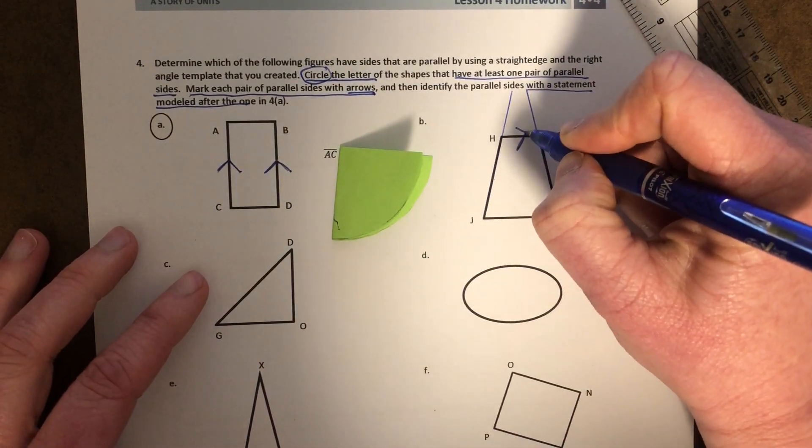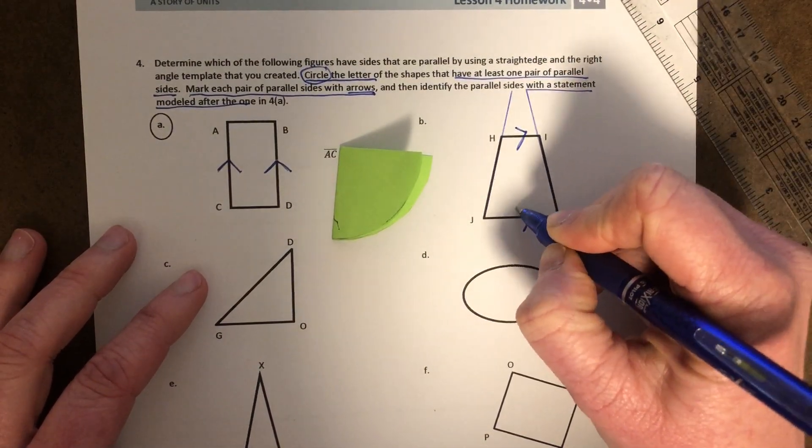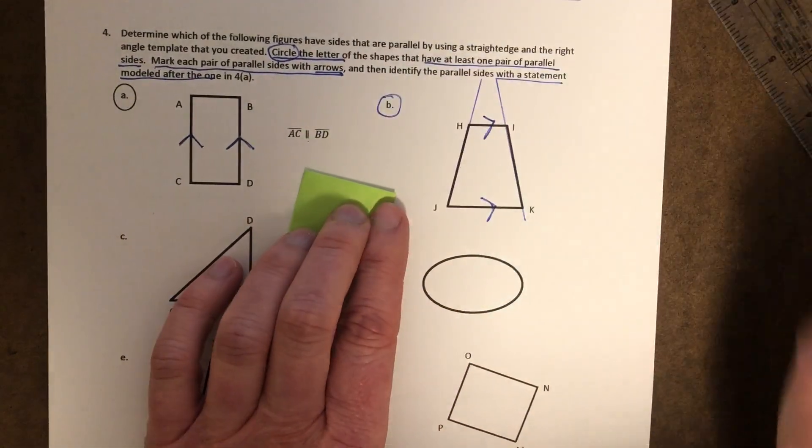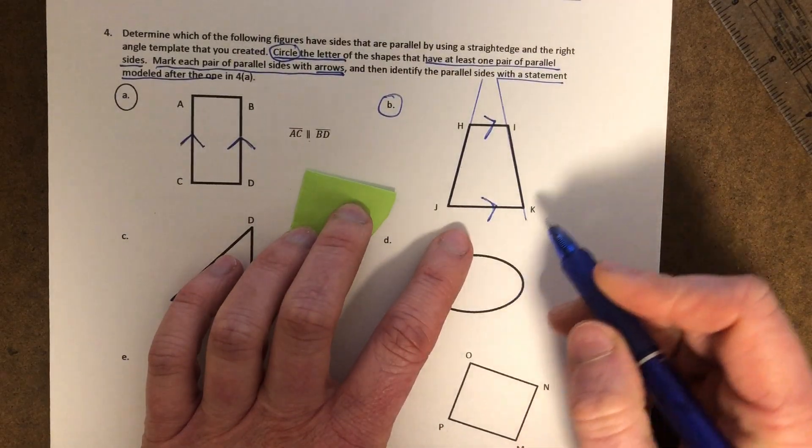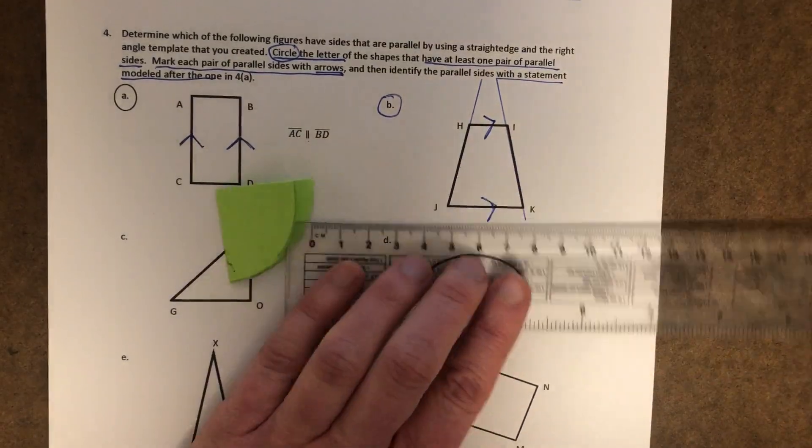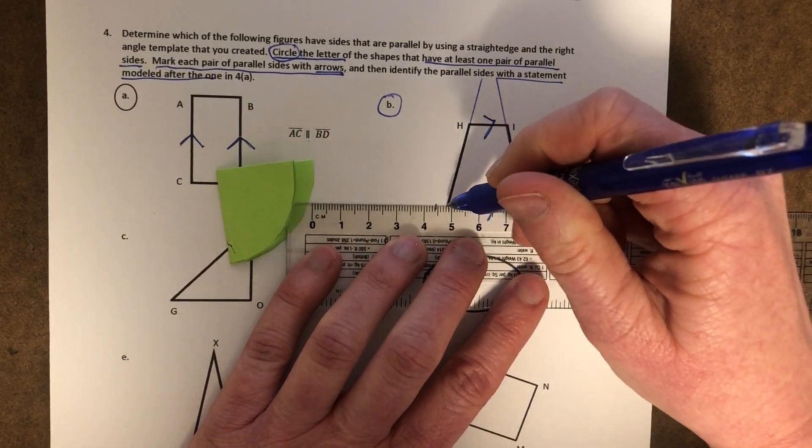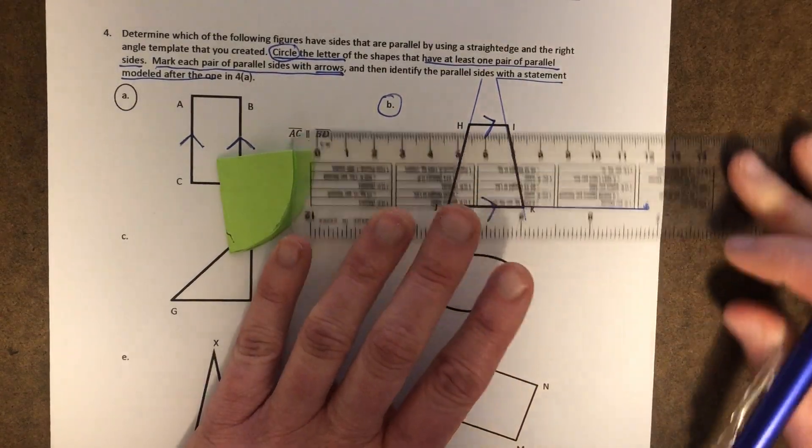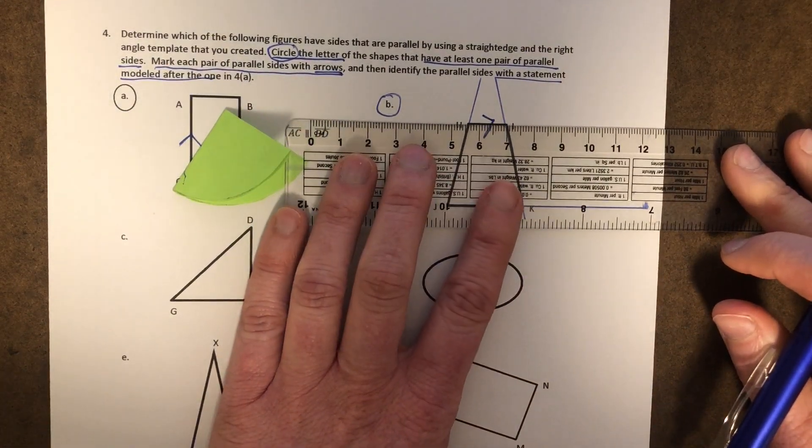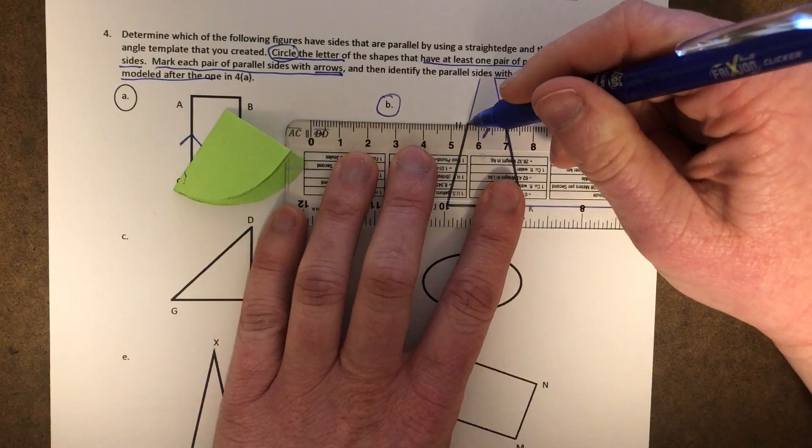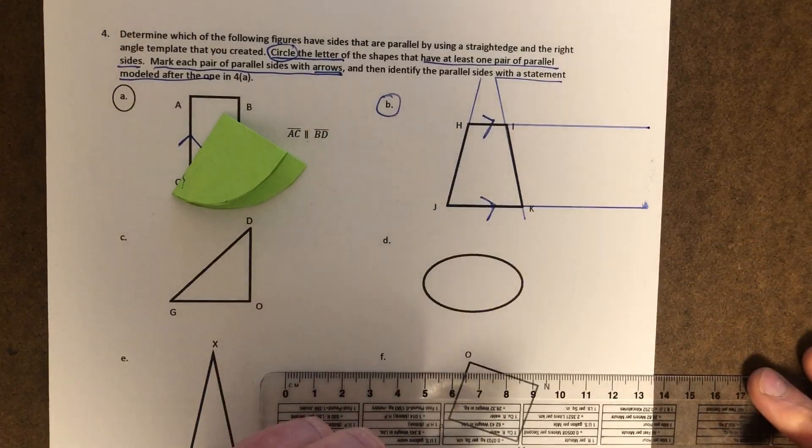However, these lines are parallel. So we're going to circle it because we found at least one pair of parallel lines. And if you want to double check me, you can extend your lines and see that they will run right next to each other without ever intersecting. Awesome.